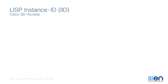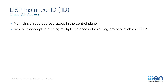LISP Instance IDs — what are they and how do you use them? A LISP Instance ID maintains a unique address space in the control plane. An Instance ID can be thought of similarly to deploying multiple instances of a traditional routing protocol. For example, configuring EIGRP Process 100, EIGRP Process 200, and EIGRP Process 300. Each of those processes has their own control plane communication independent of the others, and each has their own routing table information separate from one another. These remain completely isolated unless you explicitly leak between them.